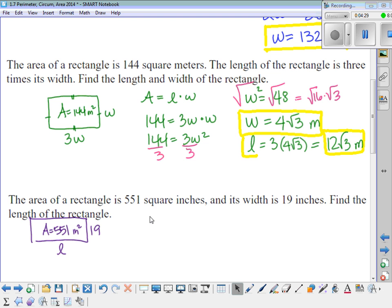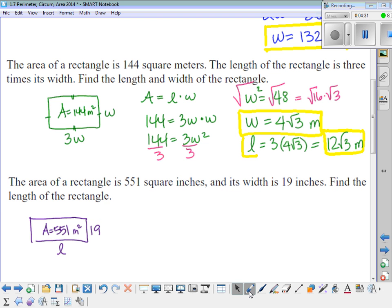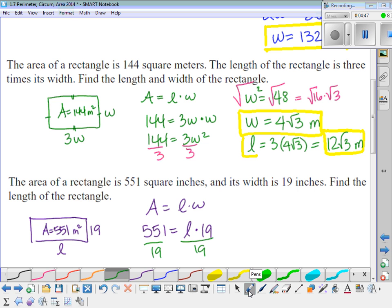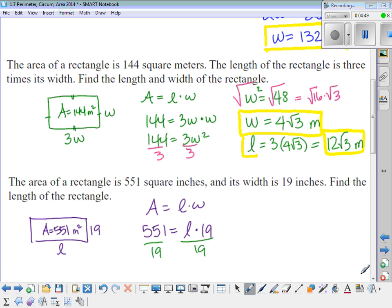So again, using area equals length times width. That means that 551 has to equal L times 19. So to get the L alone, we're just going to divide by 19. And that means that the length is 29 inches.